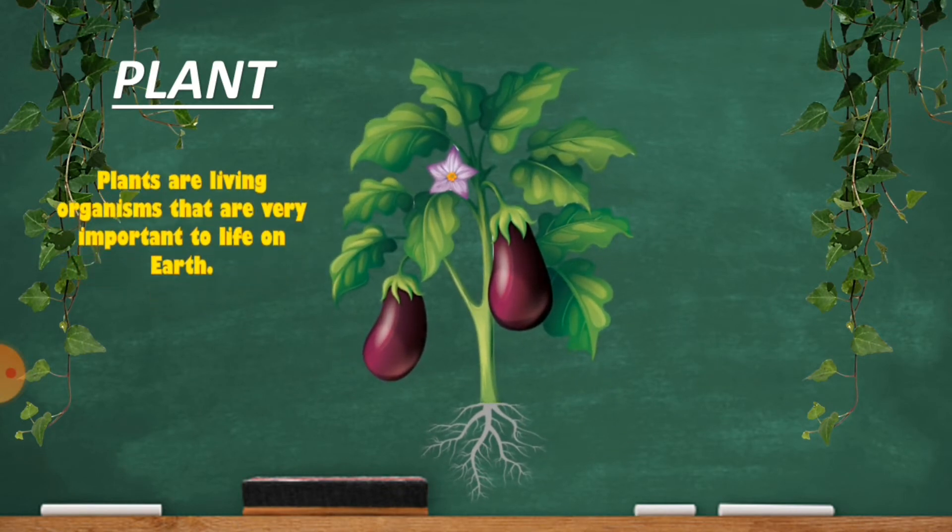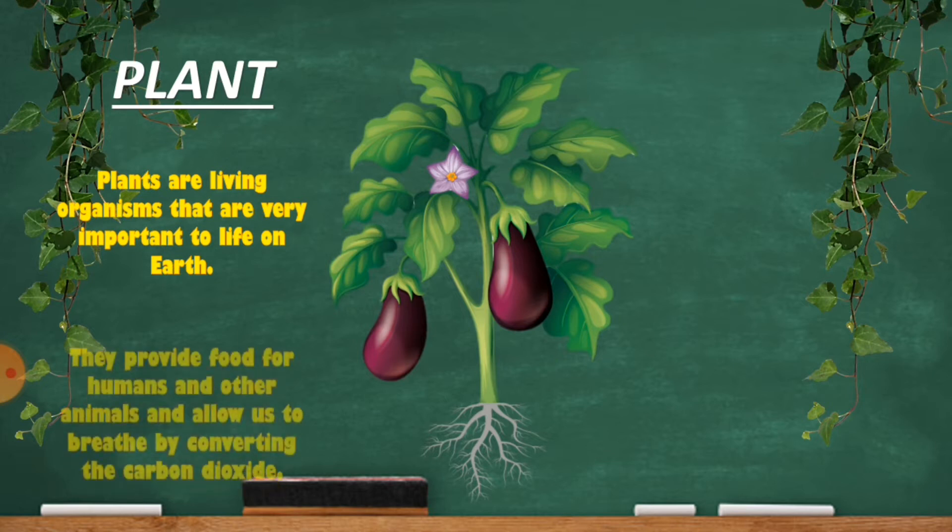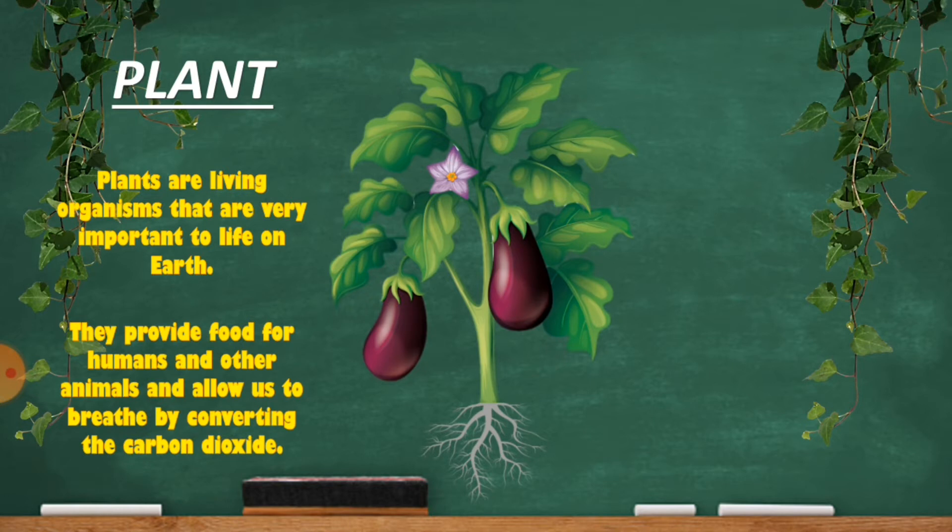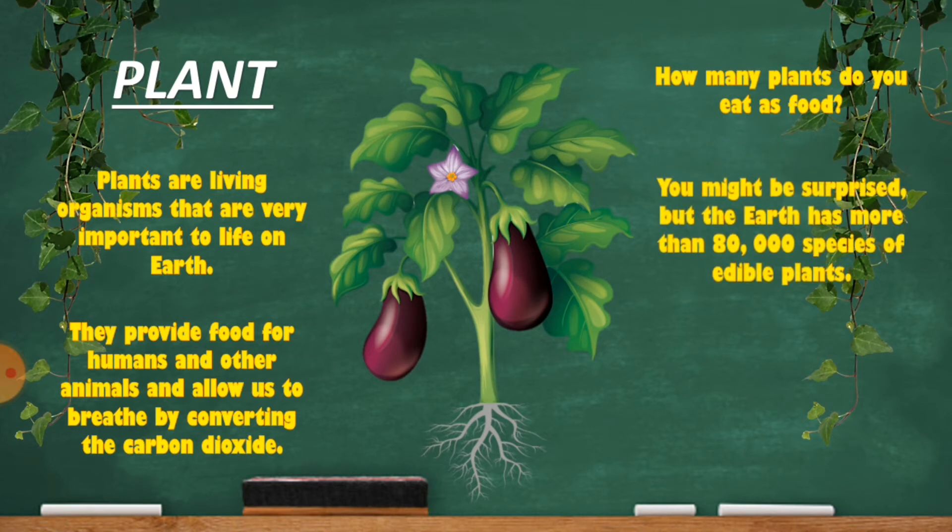Plants are living organisms that are very important to life on Earth. They provide food for humans and other animals and allow us to breathe by converting the carbon dioxide. How many plants do you eat as food?